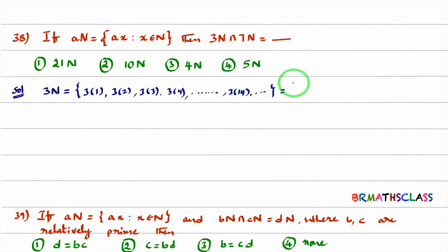So 3 into 1 is 3, 3 into 2 is 6, 3 into 3 is 9, 3 into 4 is 12. Like that, it's a 3 table. You will get 15, 18, 21. If you keep on going like this, 42, like that, it's an infinite set you will get. 3N looks like this. 3N is a multiple of 3.